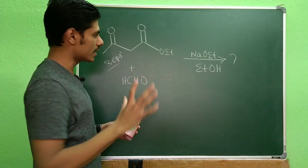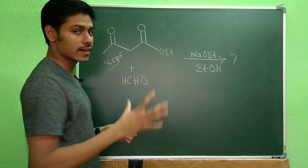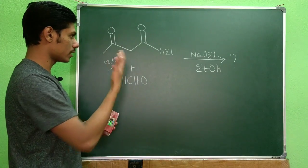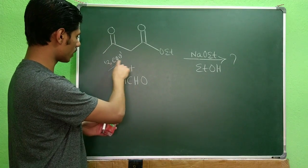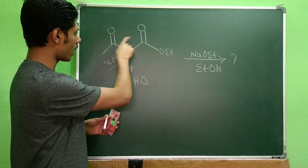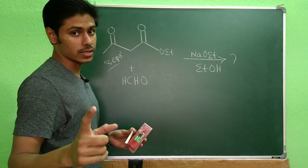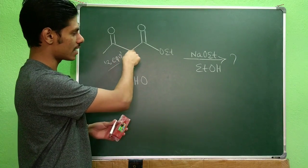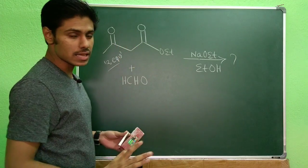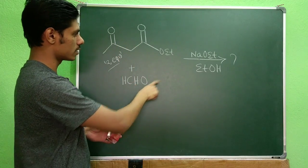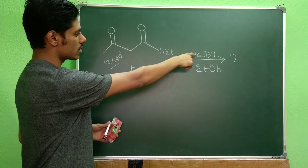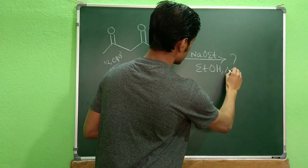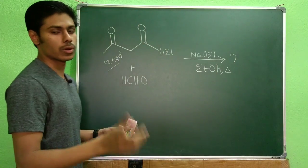First you have to look into the reagents — what are the reagents given carefully and what are the equivalents. These two equivalents written for ethyl acetoacetate are very important, as you will see later. Two equivalents of ethyl acetoacetate are given along with formaldehyde, treated with sodium ethoxide in ethanol. What will be the product?